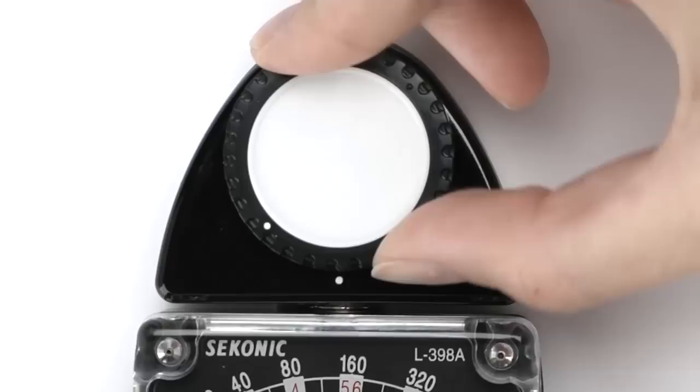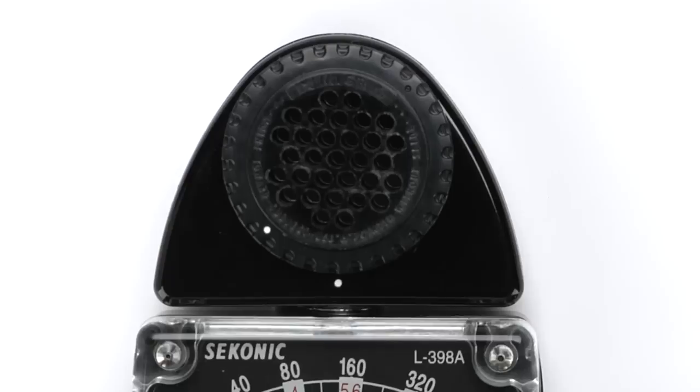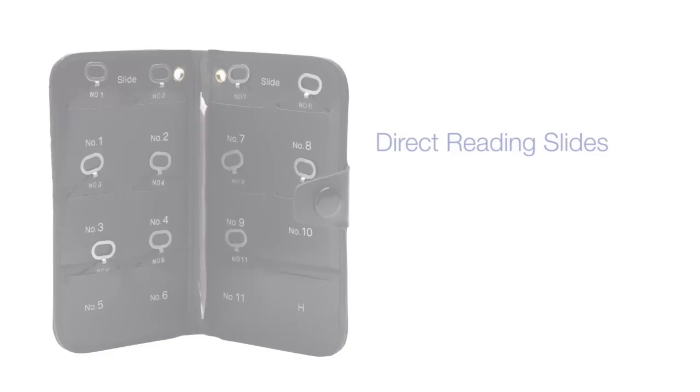L398 Accessories. Among the accessories included with the L398A are a LumiDisc, used for determining ratios of two or more light sources, and a LumiGrid, used to take reflected light readings when the meter is pointed at the subject from the camera position.